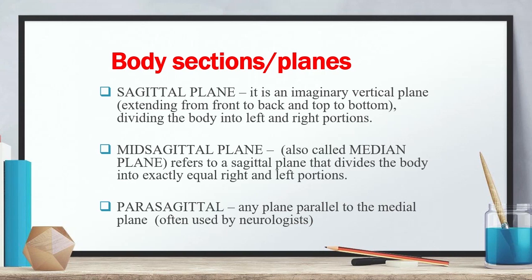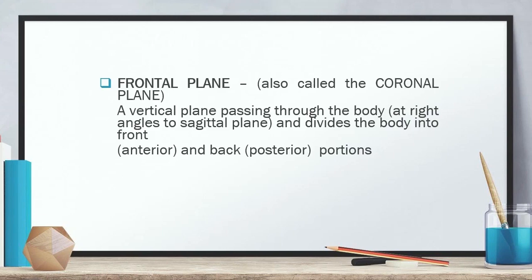The frontal plane, also called the coronal plane, is a vertical plane passing through the body at right angles to the sagittal plane, dividing the body into front (anterior) and back (posterior) portions — the ventral and dorsal sides of the body. If this portion is cut, it is called the frontal plane.